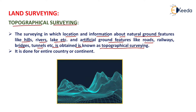The data collected in topographical surveying generally contains information about natural ground features like hills, rivers, and lakes, with data in the form of elevation, distances, etc. For artificial ground features like roads, railways, and bridges, the data is also in the form of elevation. So if any surveying gives an idea about the topography of the earth, that type of surveying is known as topographical surveying.